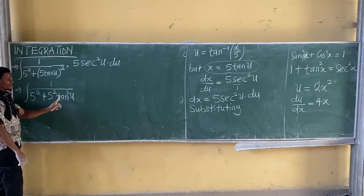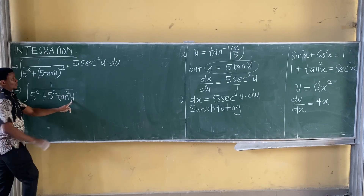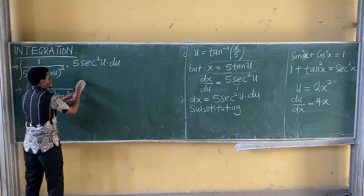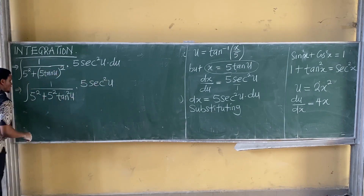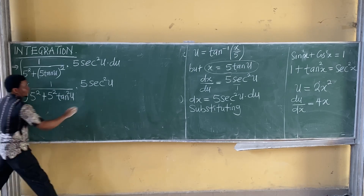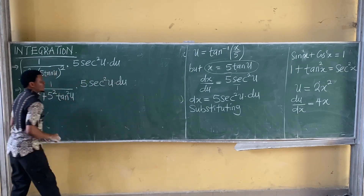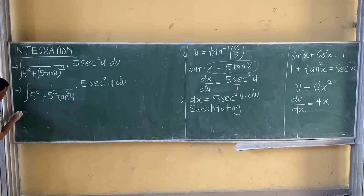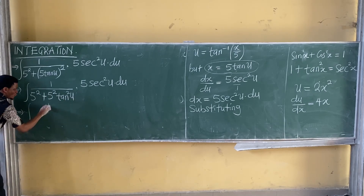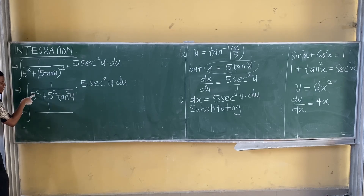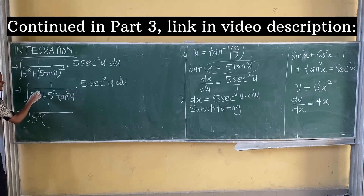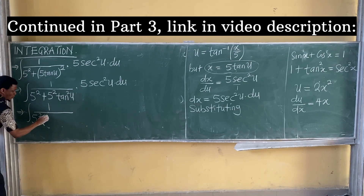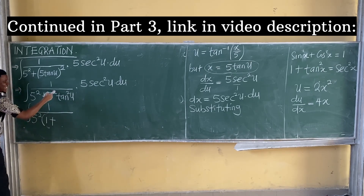Tan u squared there. Please — dots — what do you have here? Look at this. This is equal to the integral of one all over — I have five squared, five squared. Bring out five squared here. Five squared cancels five squared. What do you have here? One plus... cancel five squared here.